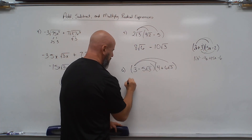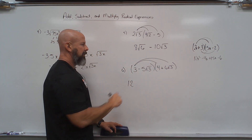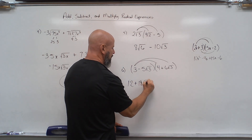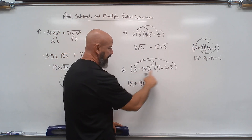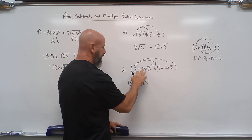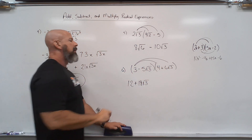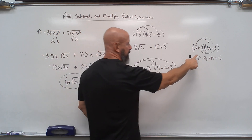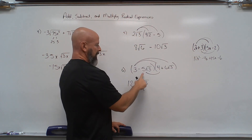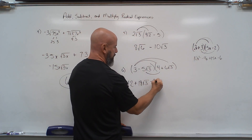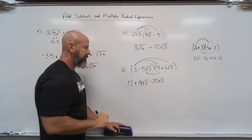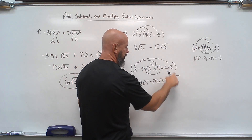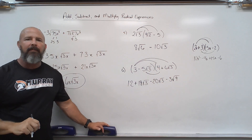So 3 times 4 is 12, and 3 times 6 root 3 is 18 root 3 — outside with outside, 3 times 6, with no inside piece to multiply. Then picking up the second term, negative 5 root 3: outside with outside gives negative 5 times 4 equals negative 20 root 3, and negative 5 times 6 root 3 times root 3 gives negative 30 root 9, since 3 times 3 is 9.